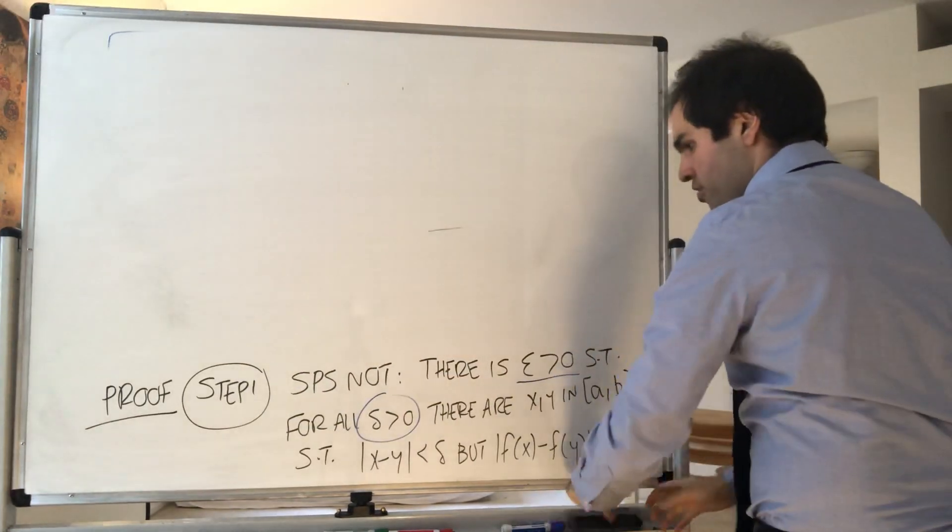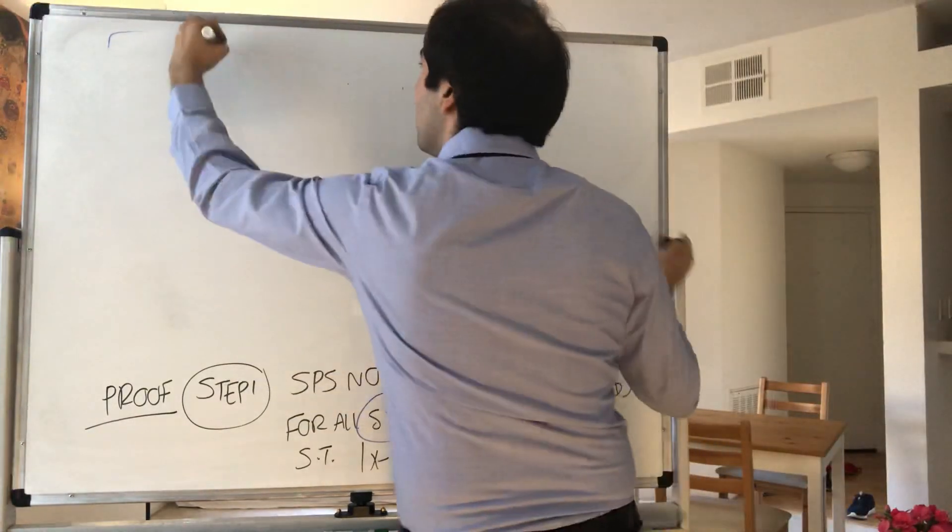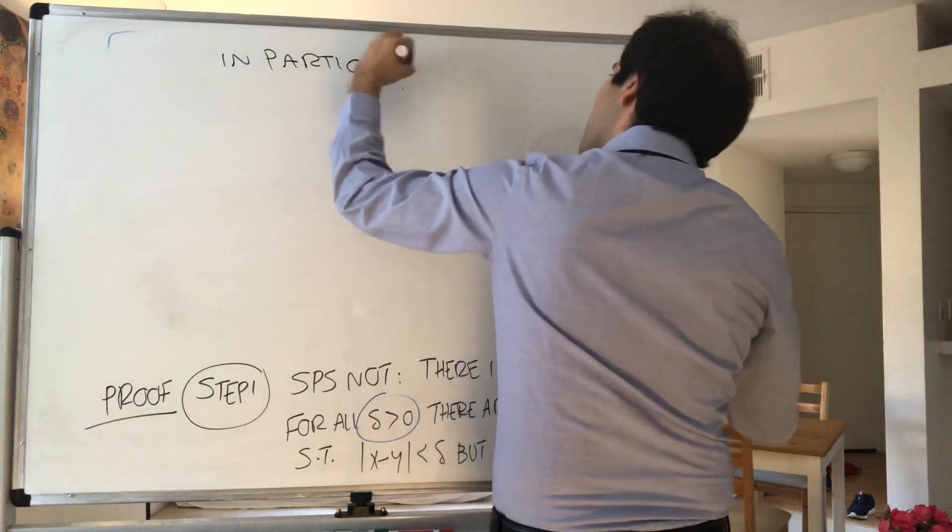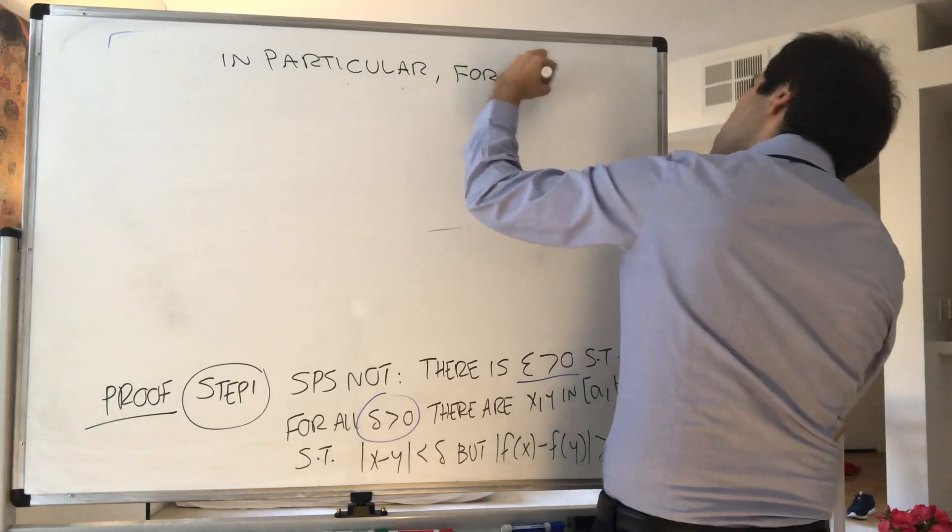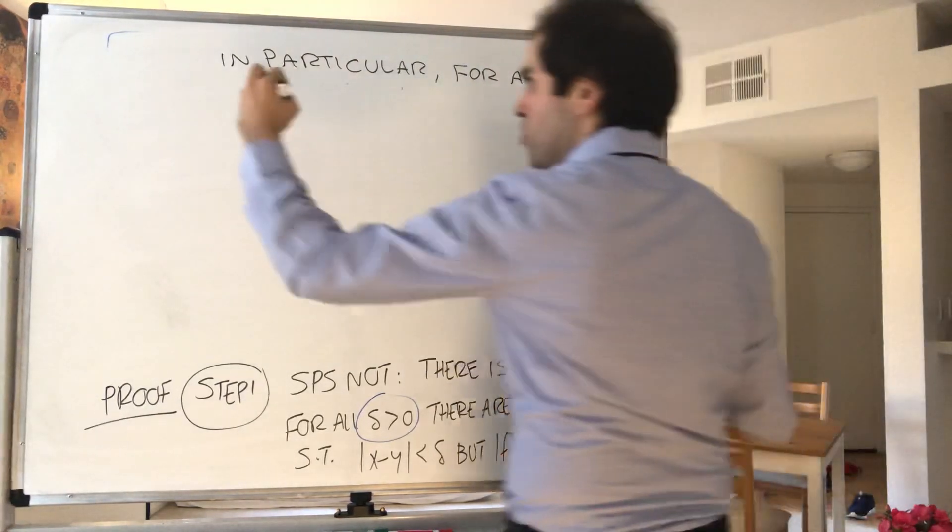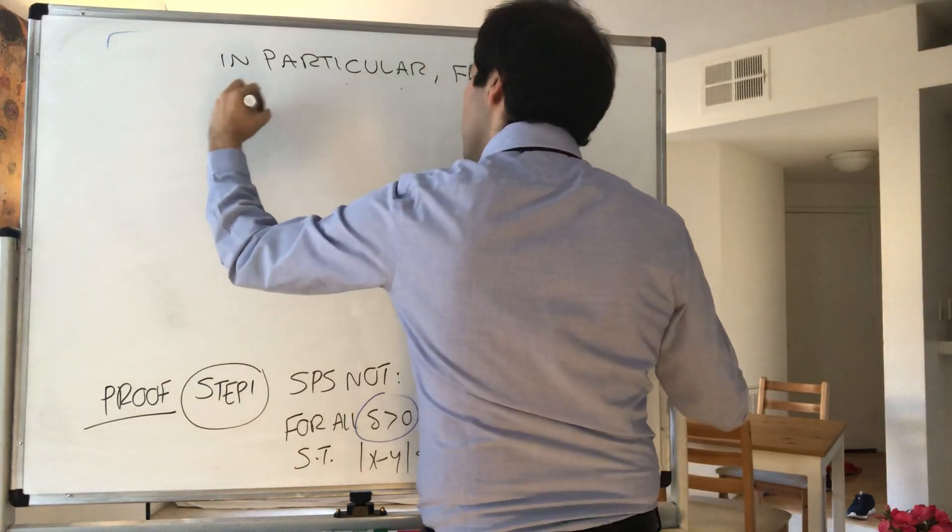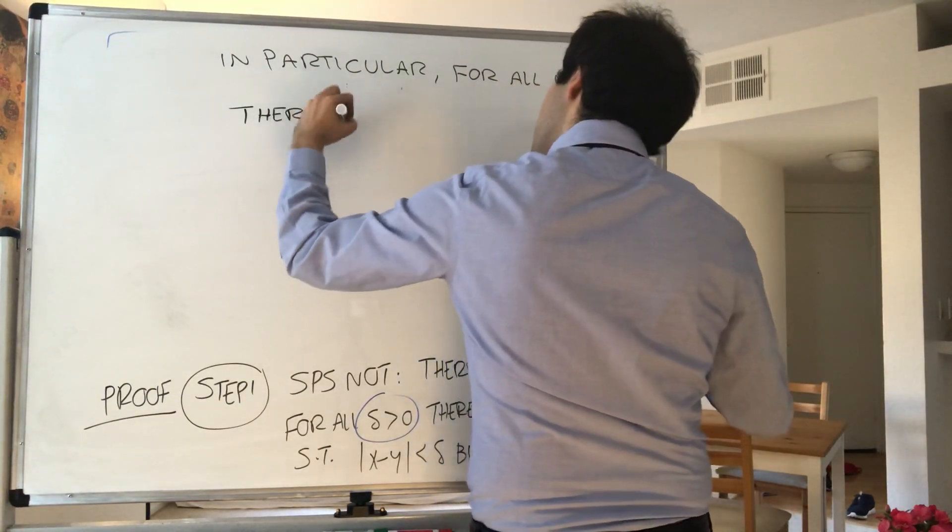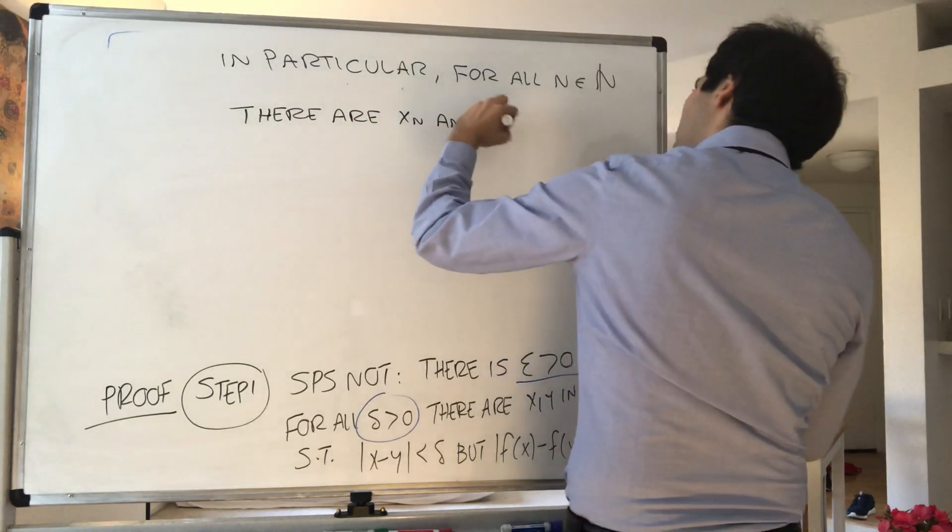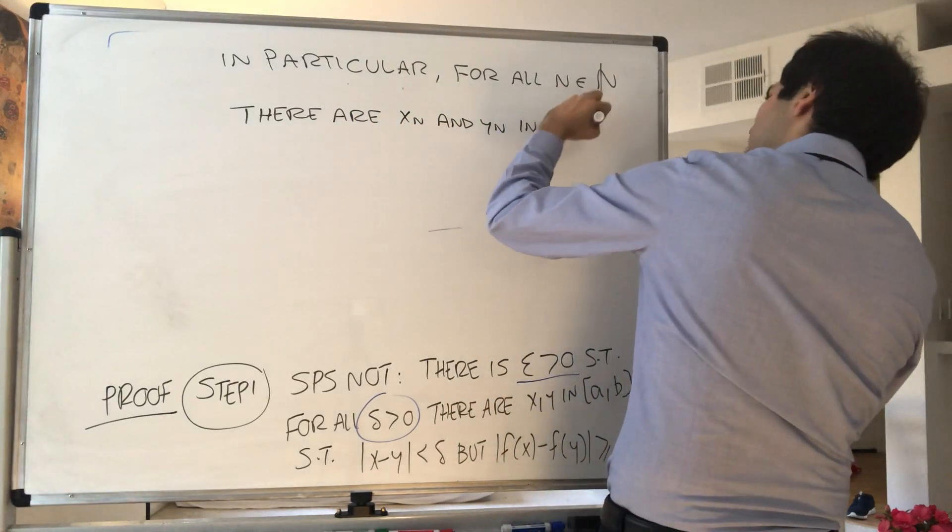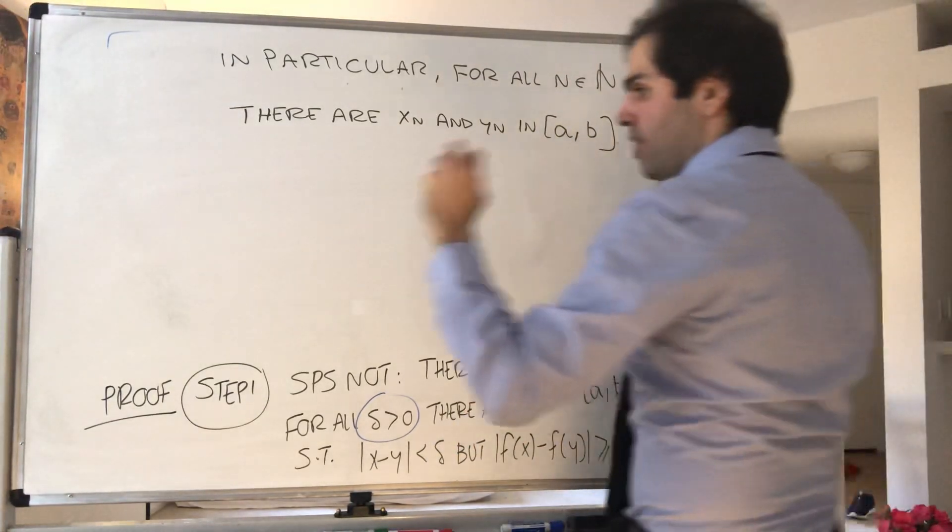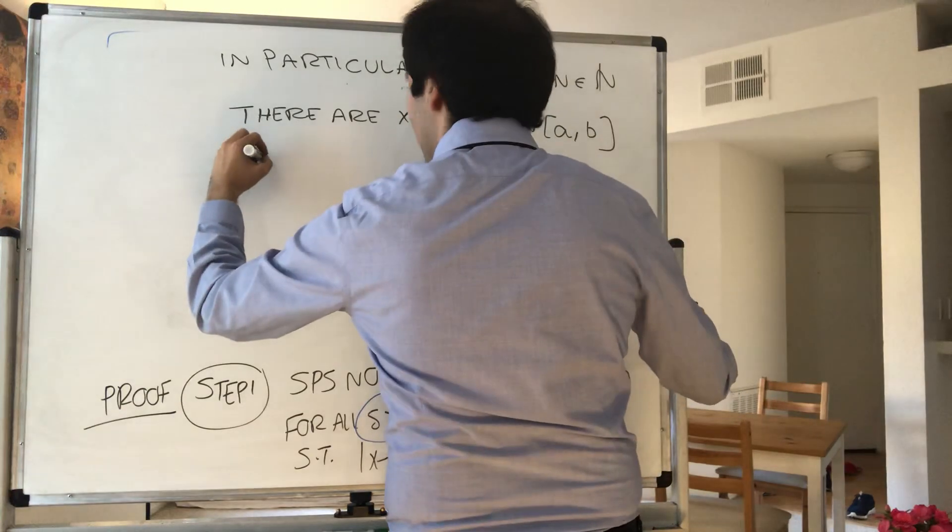So in particular, for all n natural numbers, there are numbers xₙ and yₙ in the interval [a,b], such that they're at most 1/n apart.